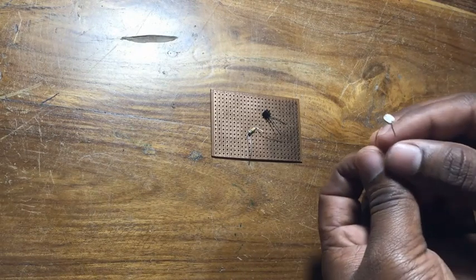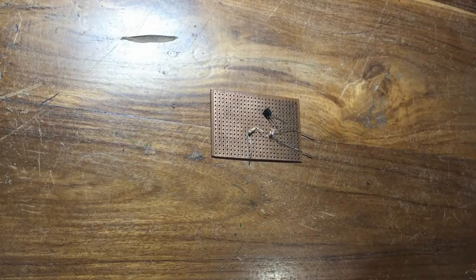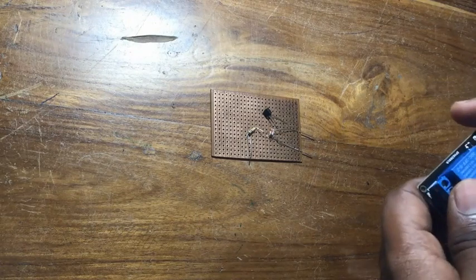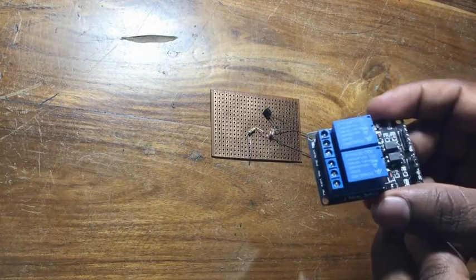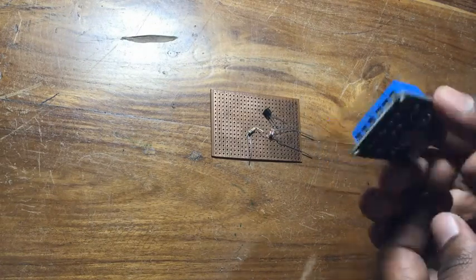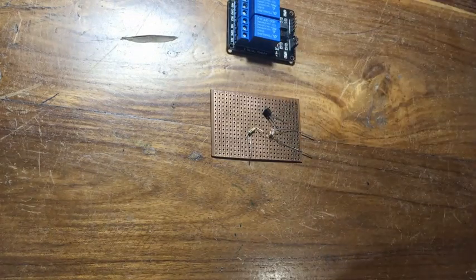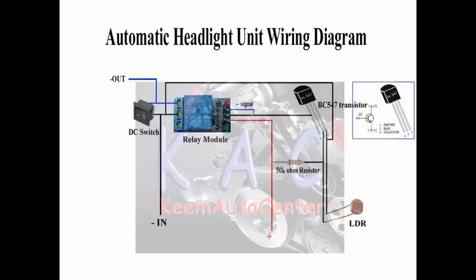For doing this you need a PCB, BC547 transistor, 50k ohm resistor, LDR, relay module, and DC switch. This is the wiring diagram — let's do it.